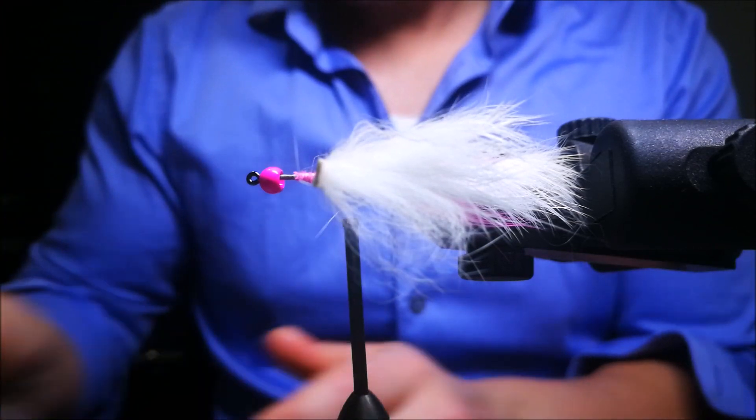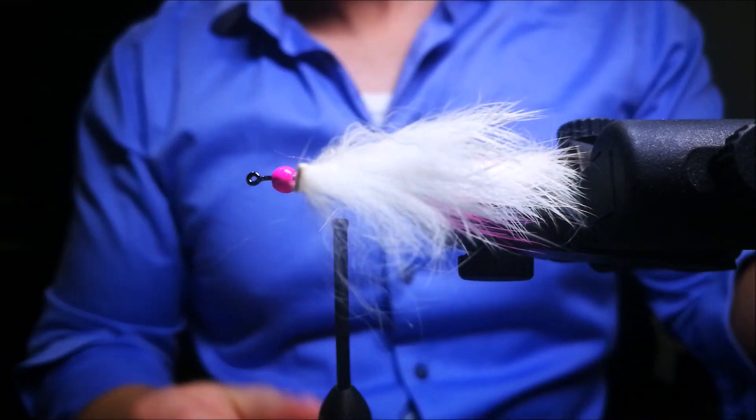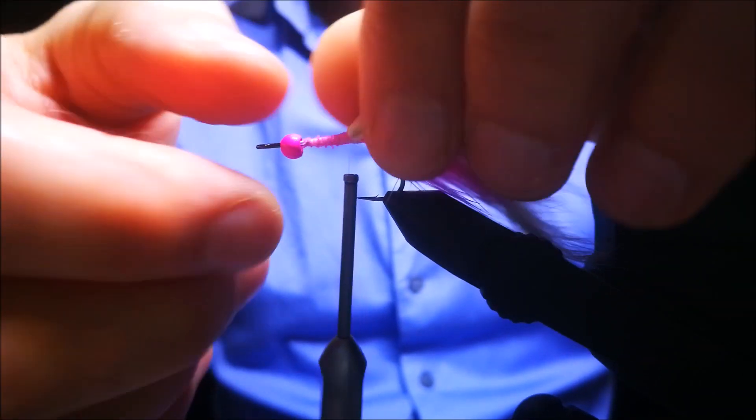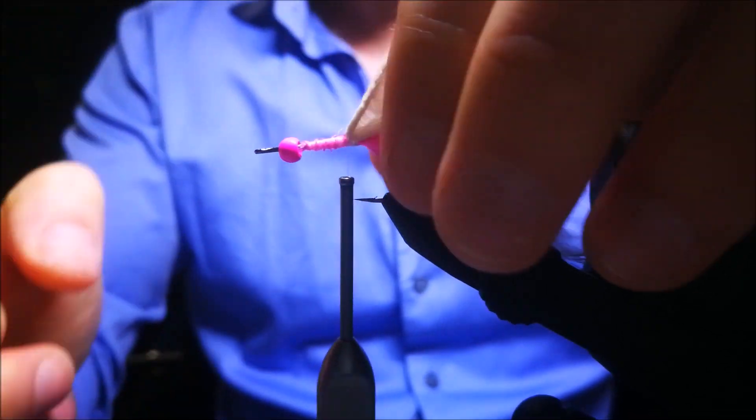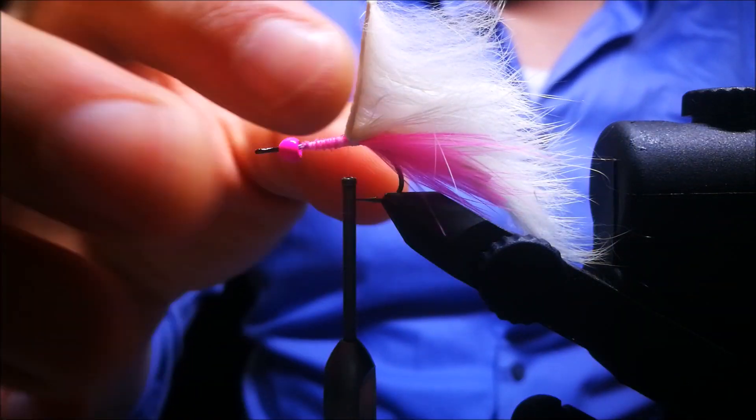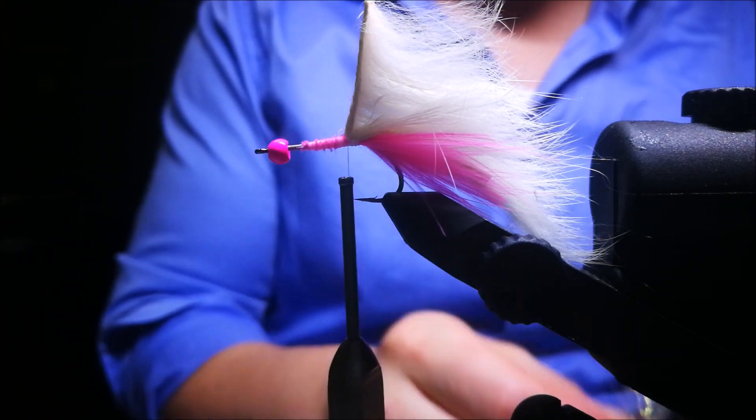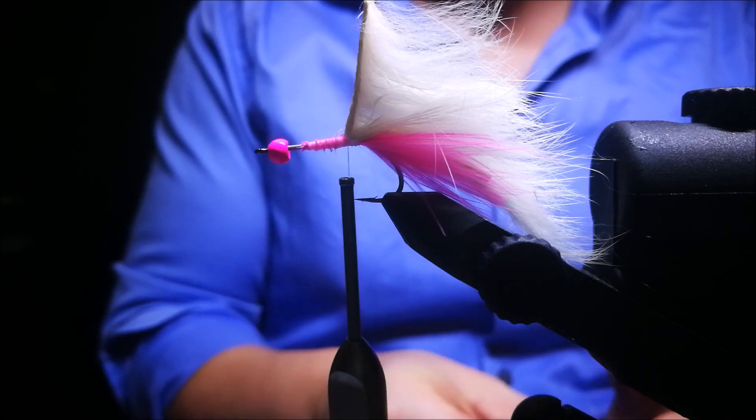When the superglue has dried, you can fold the sunker strip backwards and get out some ice dub. Now start dubbing the thread and start building a body with the dub, but stop two millimeters behind the bead, because that's where we're gonna tie in the sunker strip later on.